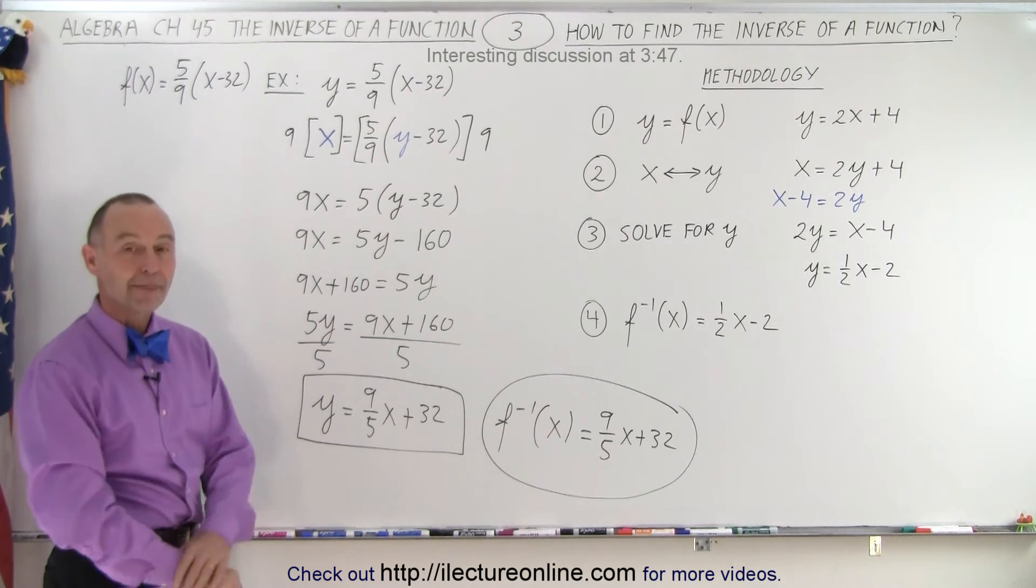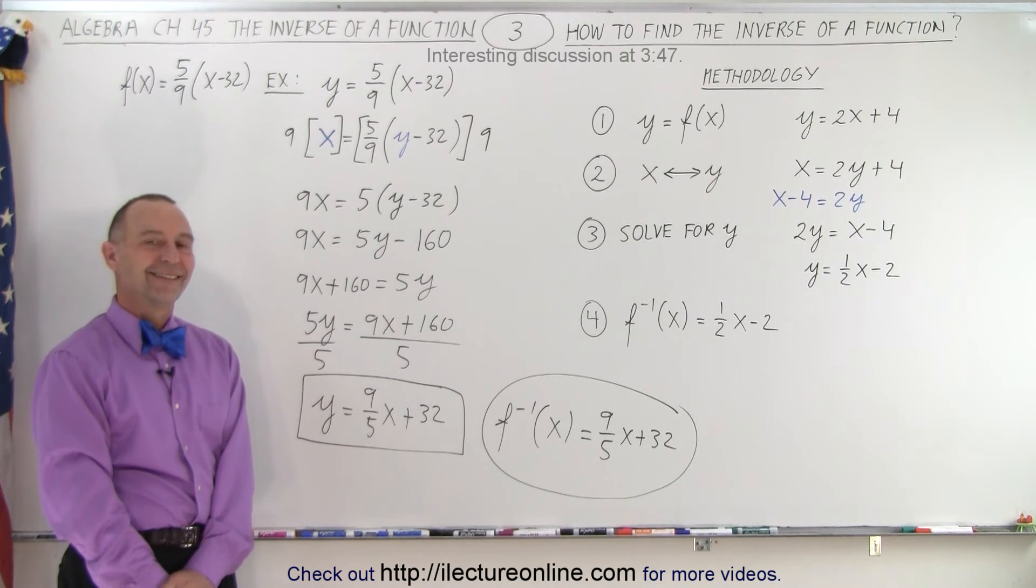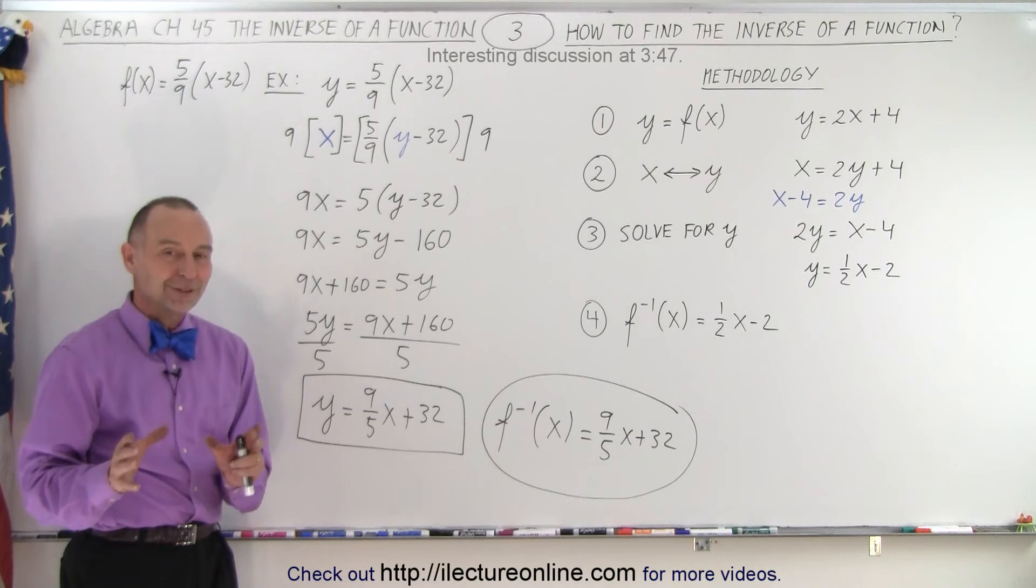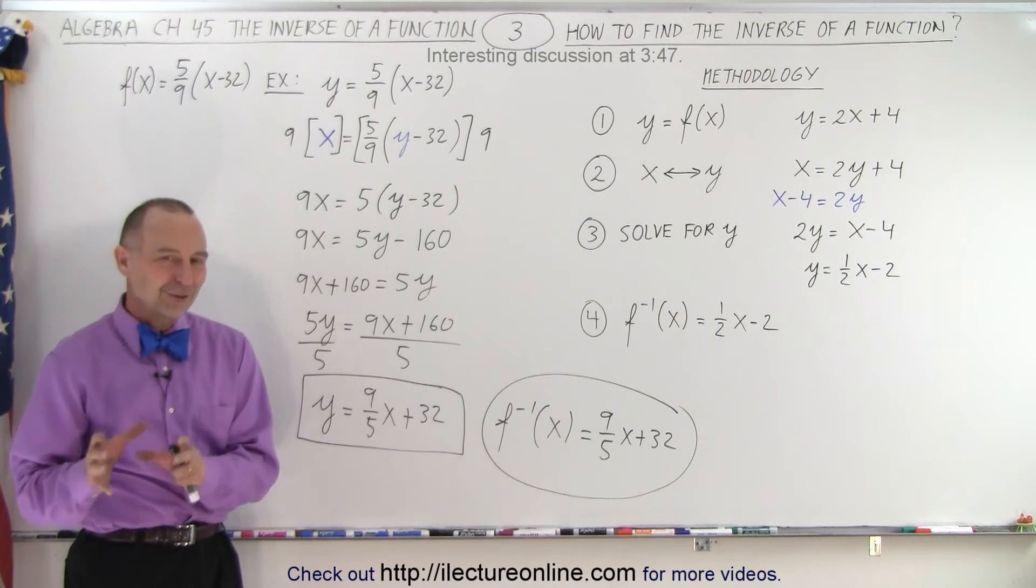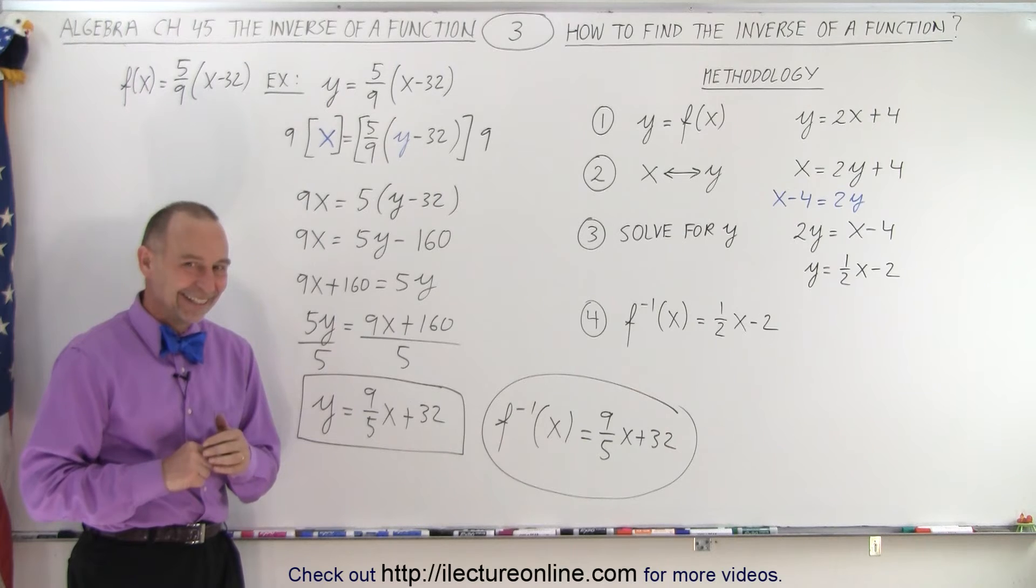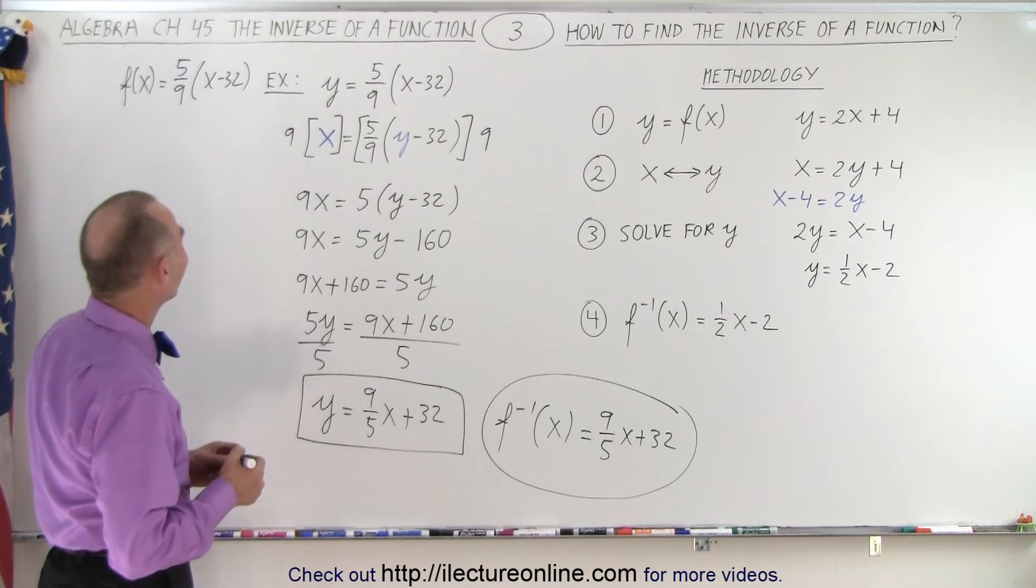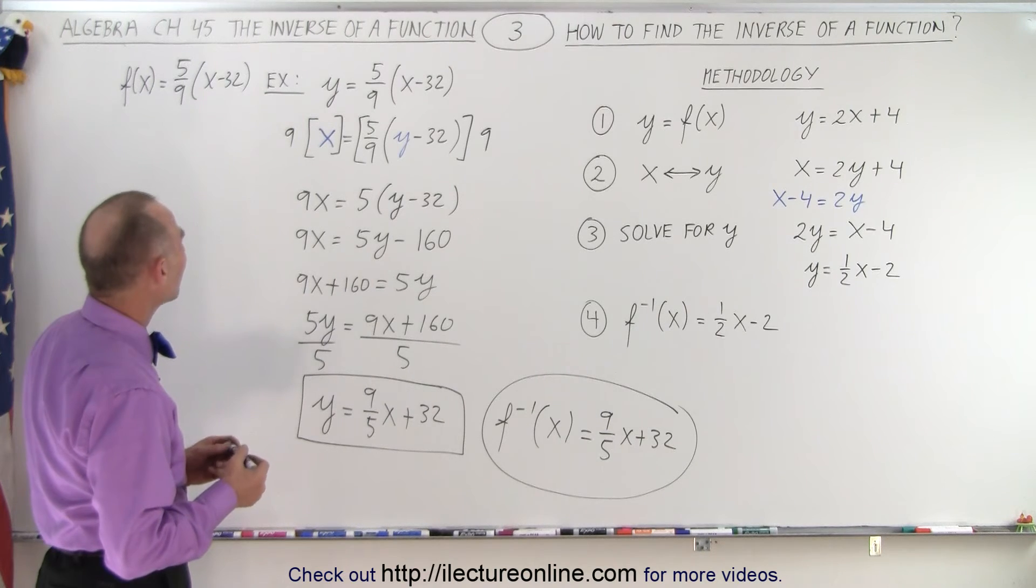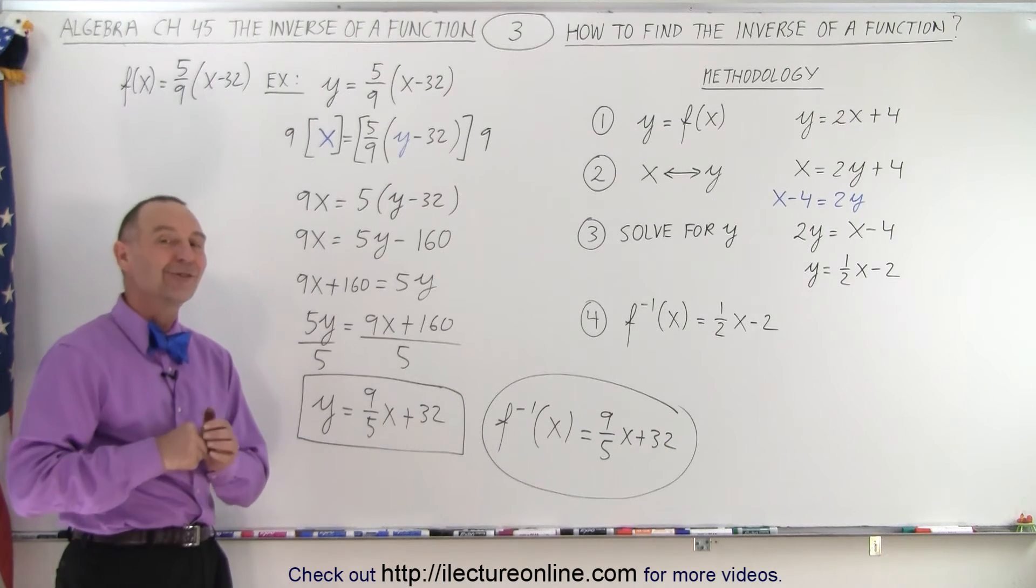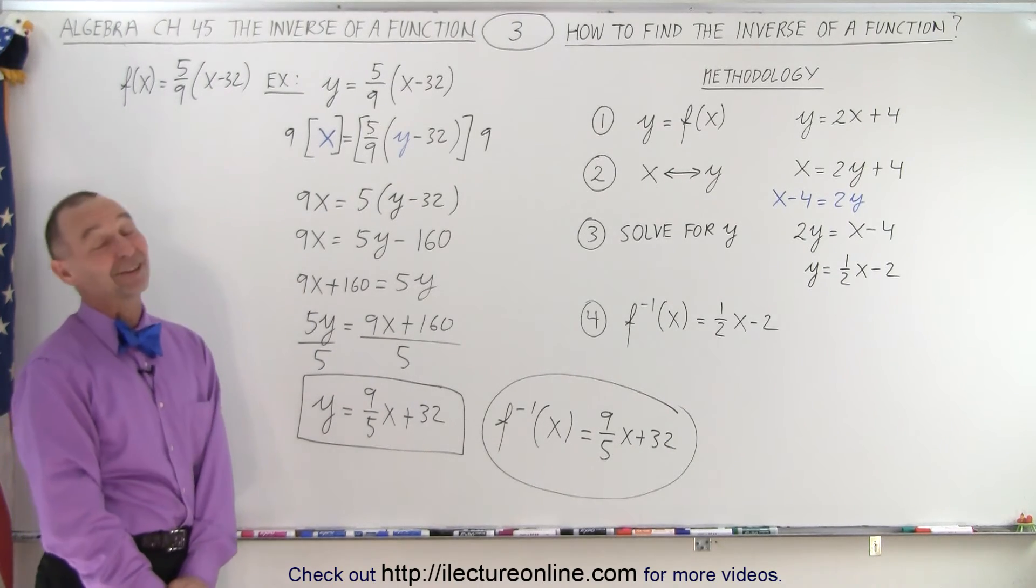Is there a temperature where the Fahrenheit and the Celsius is the same? That is absolutely correct. There's a point where the same number is used for Celsius degrees as Fahrenheit degrees. Do you remember which one? You can draw the graph and see where it intersects. It's pretty cold. It turns out the number is minus 40. At minus 40 degrees Celsius degrees is the same as Fahrenheit degrees. And that's cold.